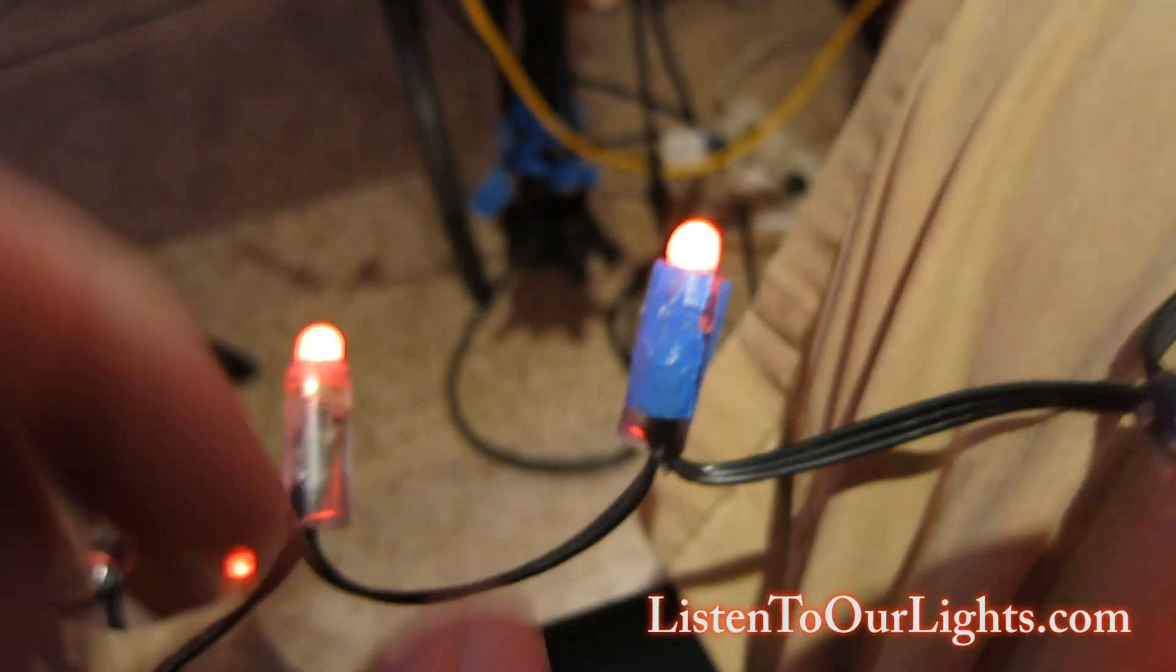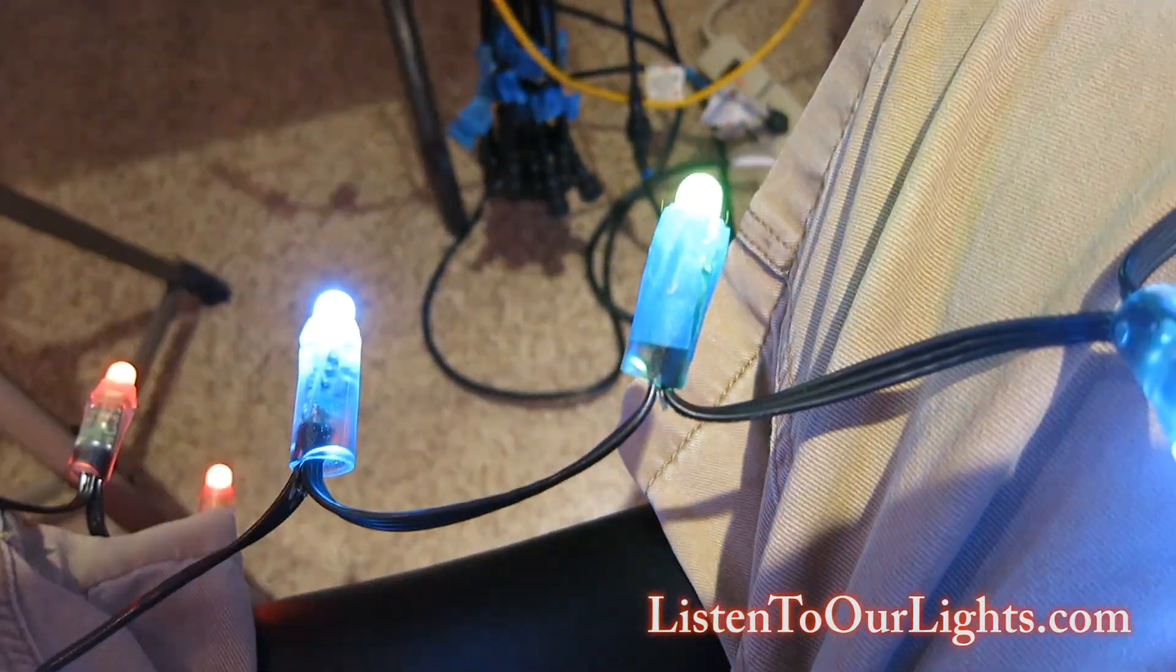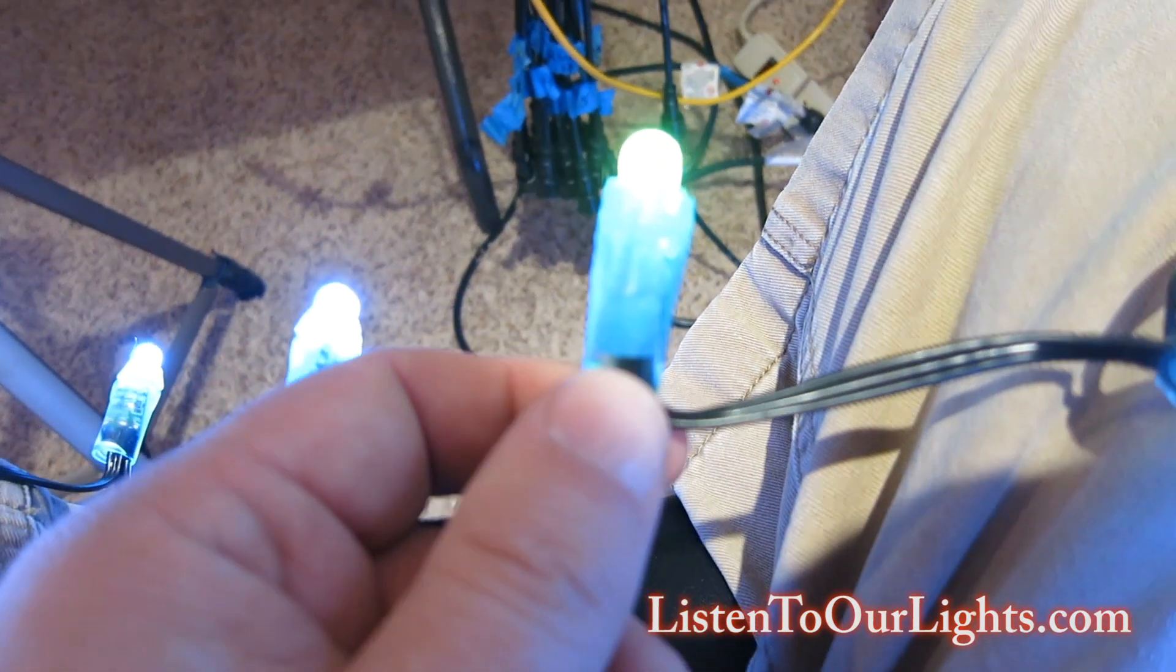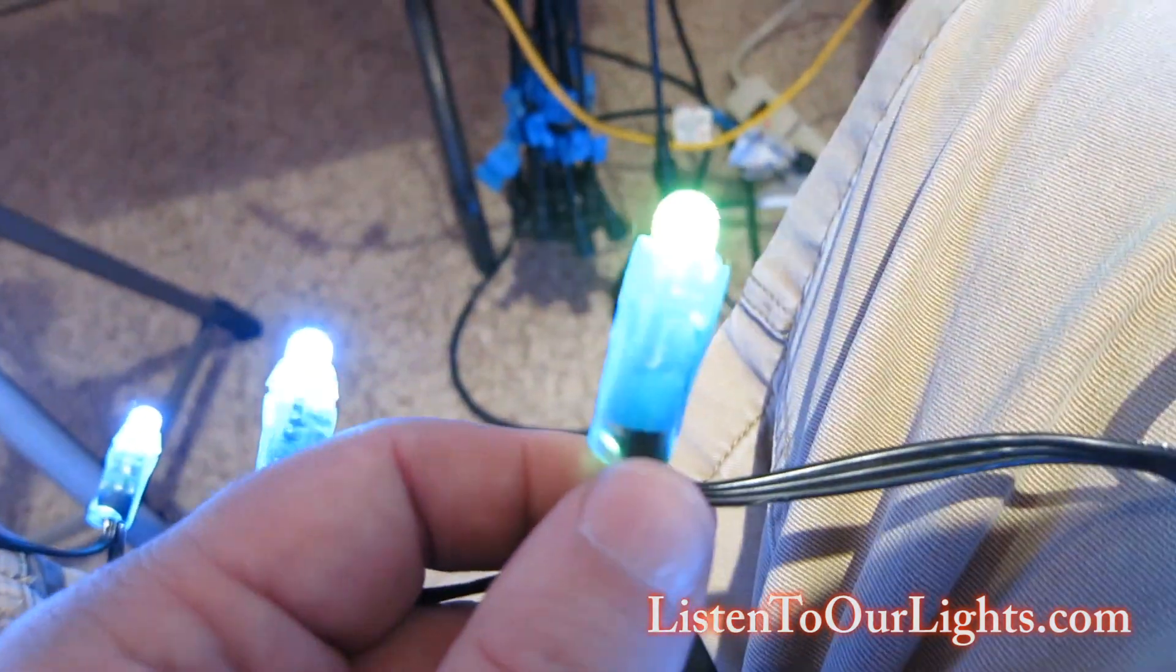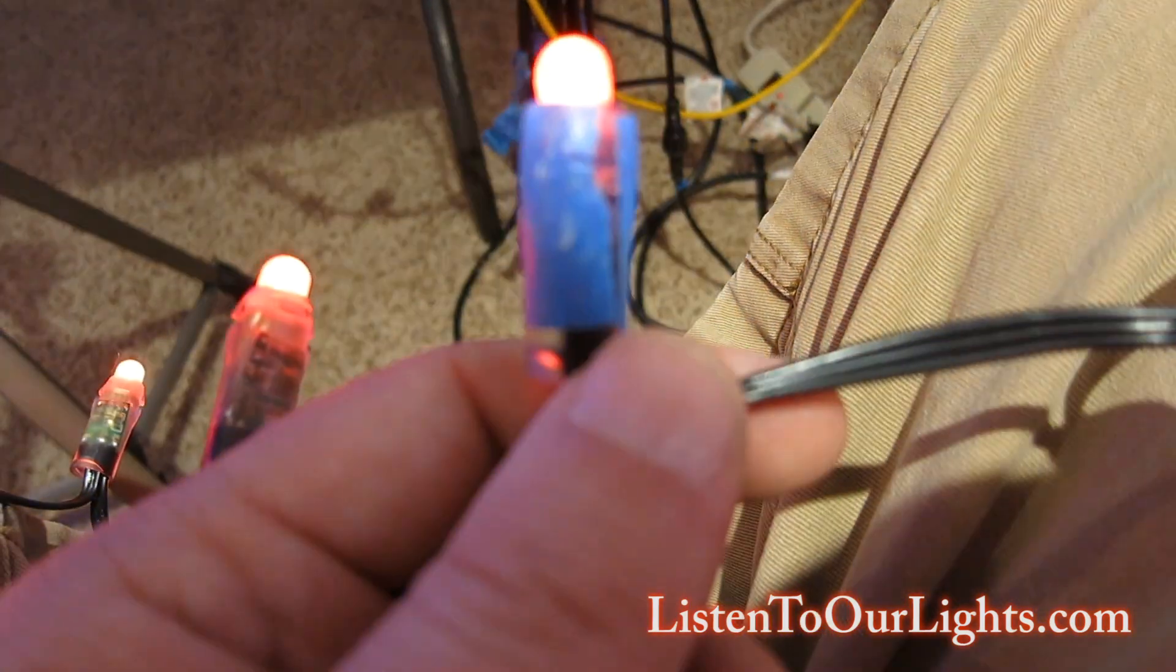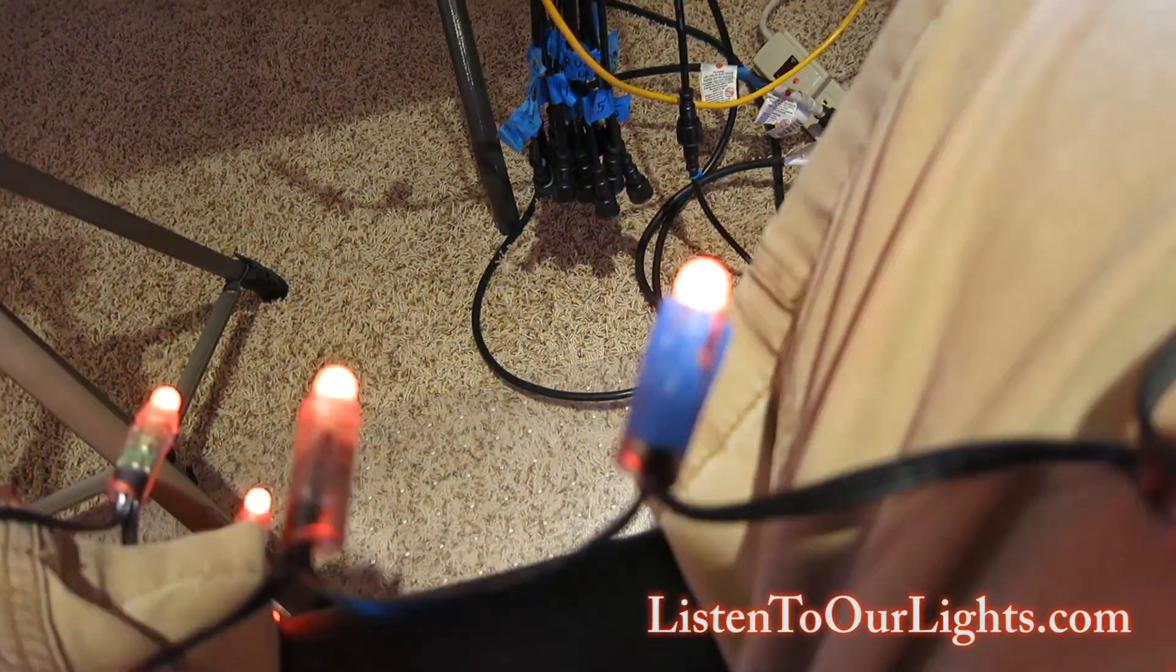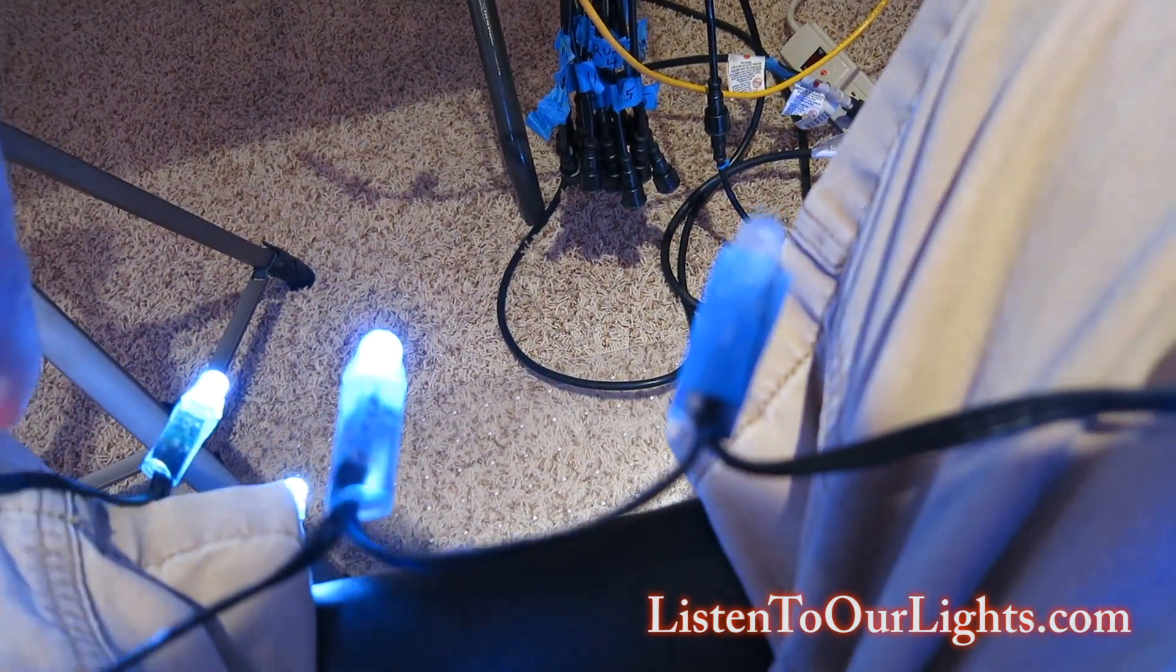Okay, so in this case with this type of pixel failure, we just need to deal with this one pixel. Now in this particular string, this is a string of 50. I'm just going to get rid of it and make it a string of 49. I put these into my 24 inch snowflakes which take 48 pixels anyway, so I just need to mark it and make sure I remember that this one's 49 pixels so that everything adds up.